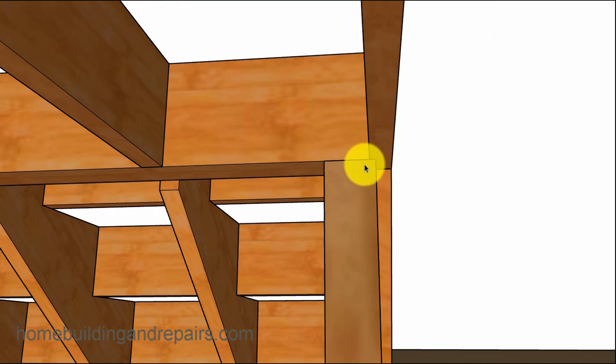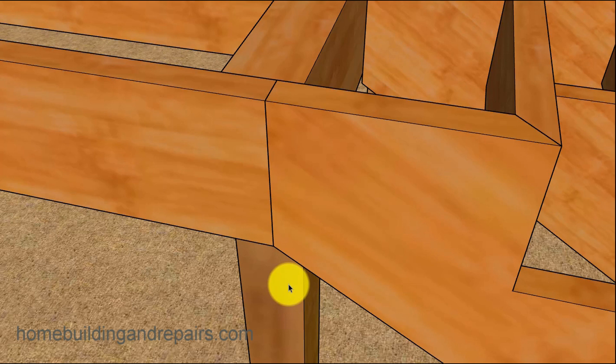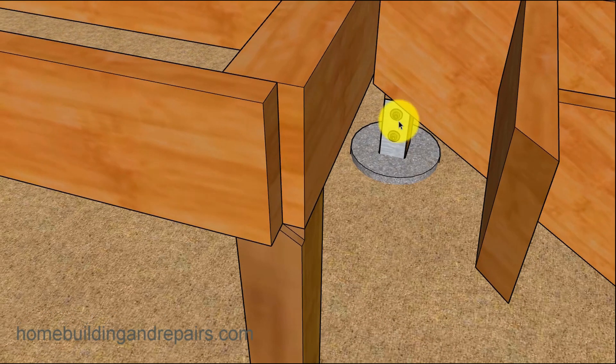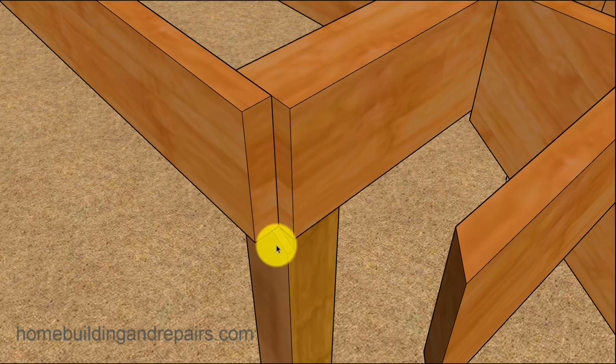Then you can simply cut a little notch in the post if you're going to bring it out three-quarters of an inch. This would just depend upon what type of finish you were going to put on the edge or the end of the deck and the stairs.